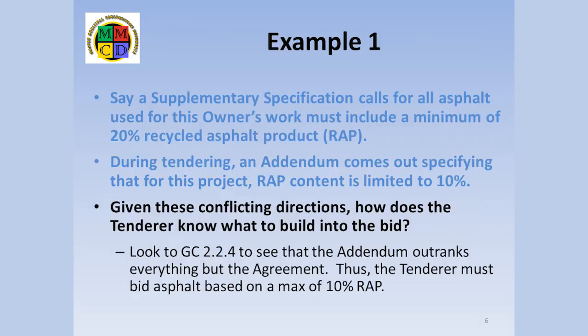Let's do another example of a simple application of the hierarchy. Say a supplementary specification requires that all asphalt used for this owner's work must include a minimum of 20% recycled asphalt product (RAP). During tendering, an addendum comes out specifying that for this project, RAP content is limited to 10%. Given these conflicting directions, how does the tenderer know what to build into the bid? We simply look to GC 2.2.4 to see that the addendum outranks everything but the agreement. Thus, the tenderer must bid asphalt based on a maximum of 10% RAP.